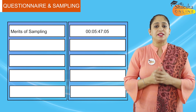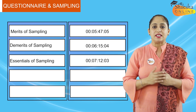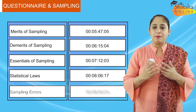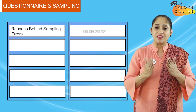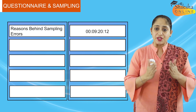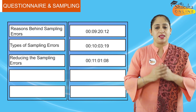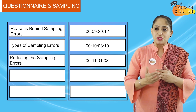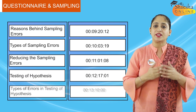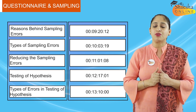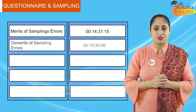We are also going to discuss the demerits of sampling, the essential requirements of sampling, statistical laws, sampling errors, and the reasons behind these errors creeping in, types of sampling errors, reducing the sampling errors. We would also be discussing about the testing of hypothesis, different types of errors in testing of hypothesis, merits of sampling errors, and demerits of sampling errors.